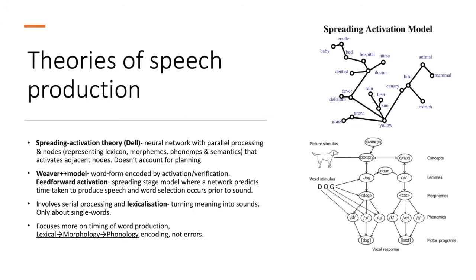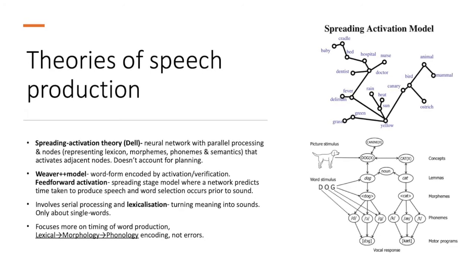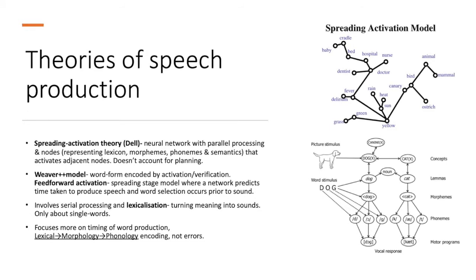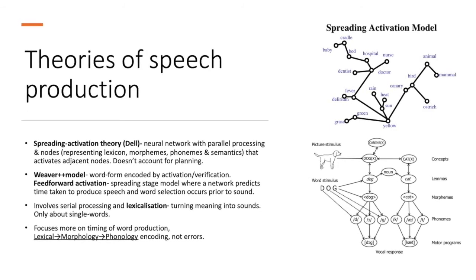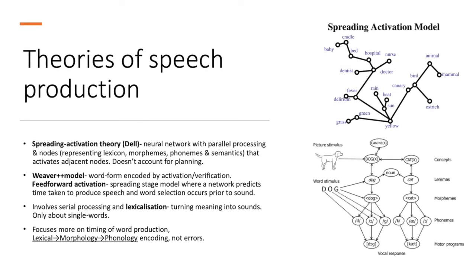Now I'll talk about theories of speech production. Spreading activation theory, according to Dell, is a neural network with parallel processing and nodes, which represent lexicon, morphemes, phonemes, and semantics, that activate adjacent nodes. And it does not account for planning.